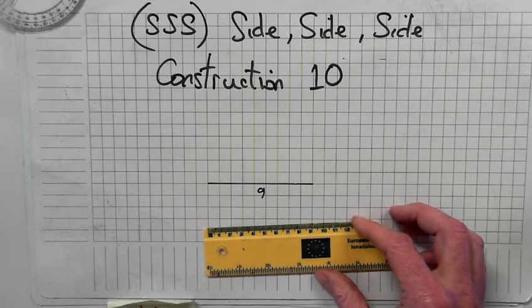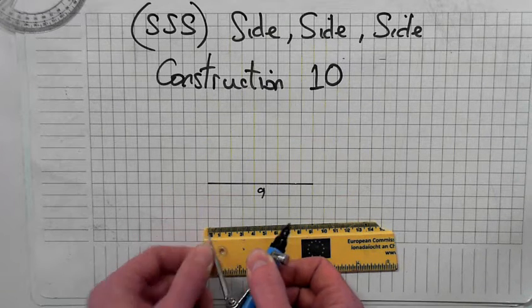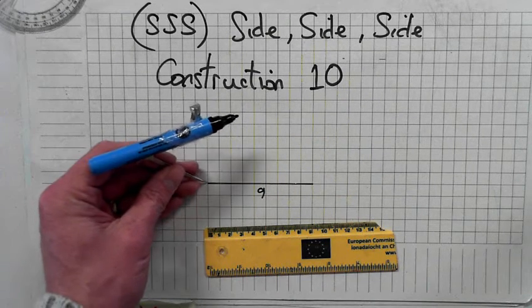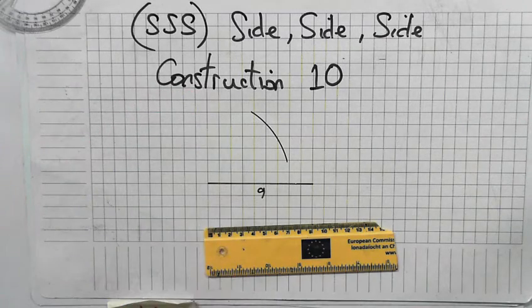And then using your ruler, measure off seven. Measure seven. Go to one of the one side. Mark it with the compass.